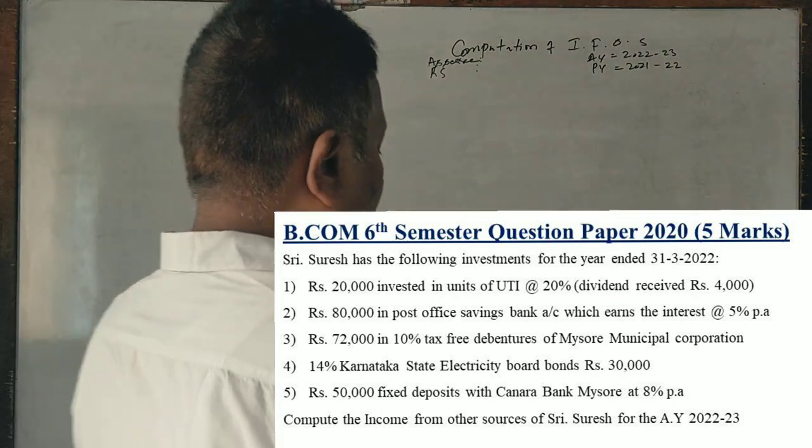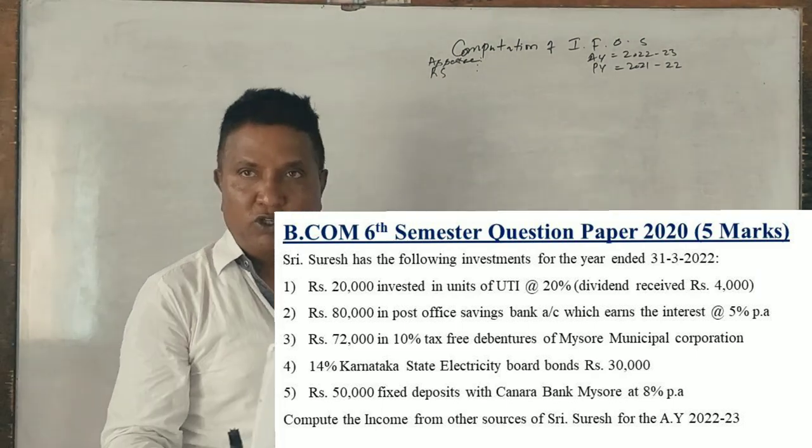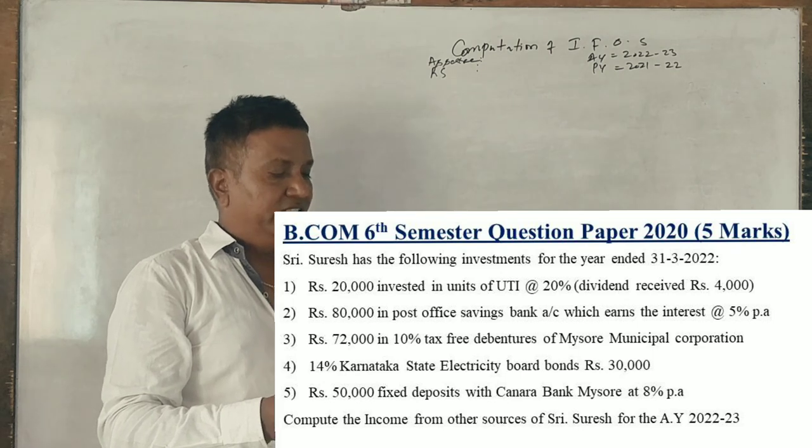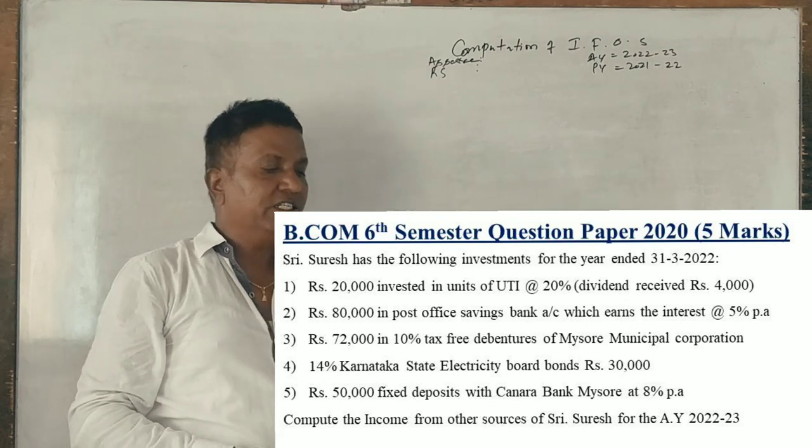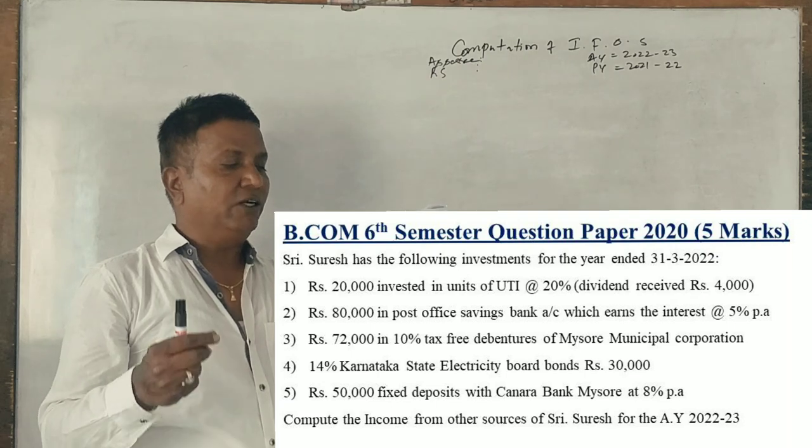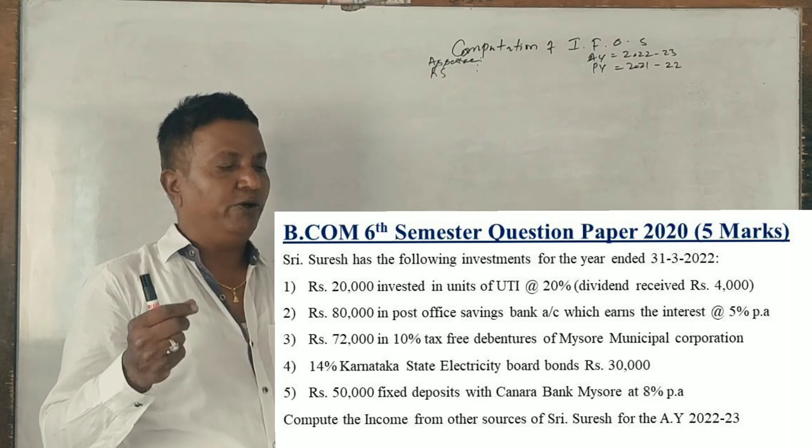2020-2021 question, income from other sources, five marks. Sri Suresh has the following investments for the year ended March 2022. Rupees 20,000 invested in UTI units.